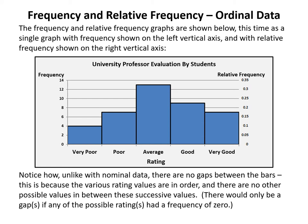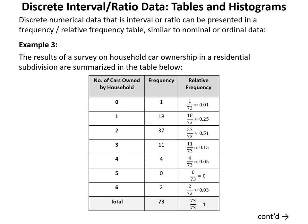There would only be gaps in such a graph if any of the possible ratings had a frequency of zero — for example, if no student gave the professor an 'average' rating, there would be a gap in the middle.